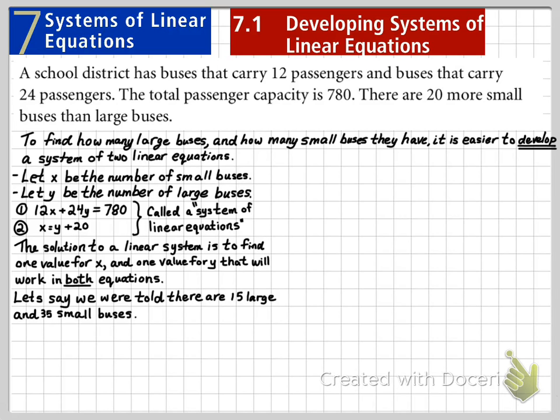Now let's say we're told that there's 15 large buses and 35 small buses. In order to prove this, we need to verify this. So we're going to take our two equations and substitute 35 for X and 15 for Y. So 12 times 35 plus 24 times 15, we have to show that that is going to equal 780, and it is.